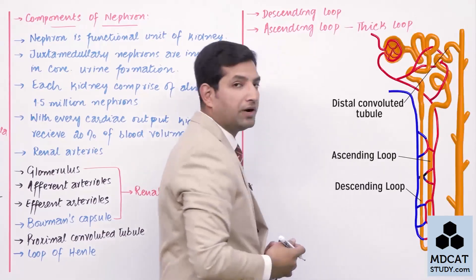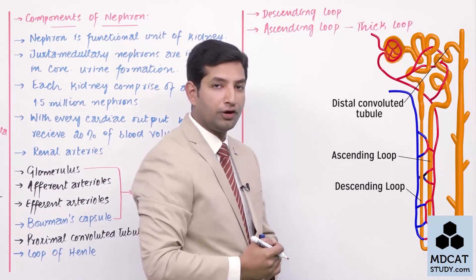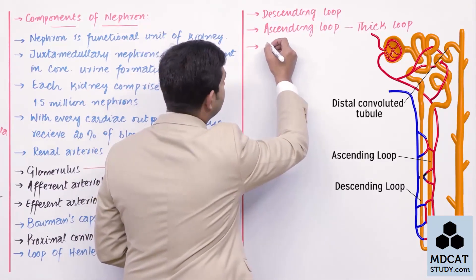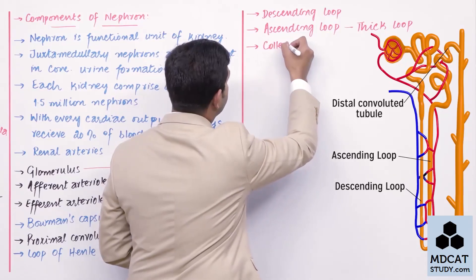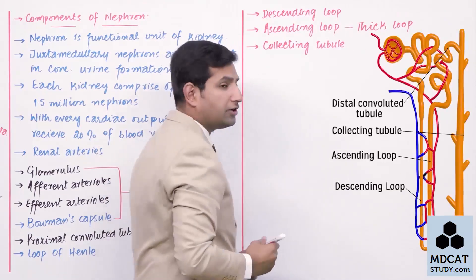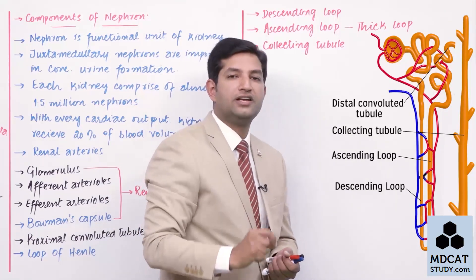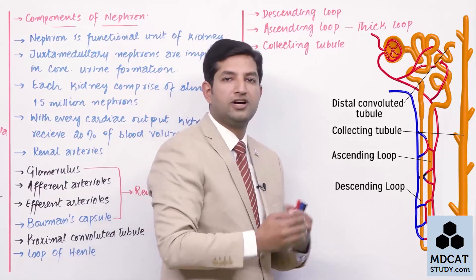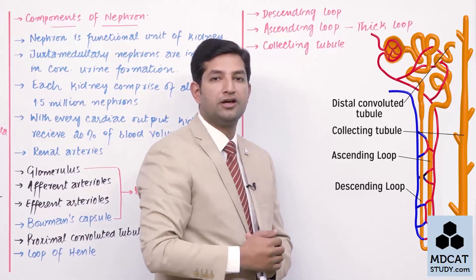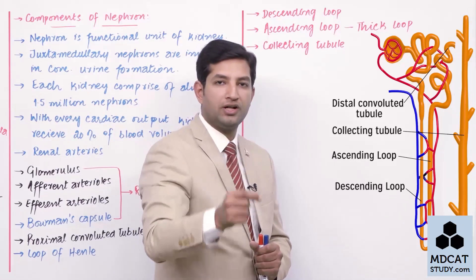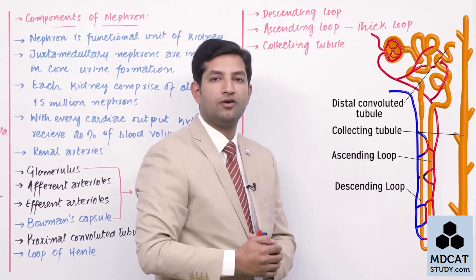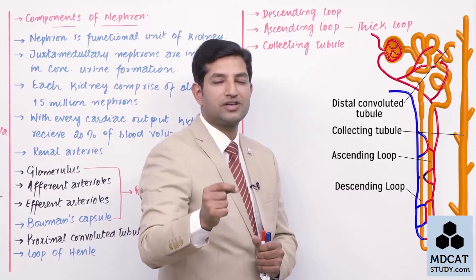After the thick ascending limb, it ends up with the collecting tubule. The collecting tubule collects everything that has been reabsorbed back into the tubular system. Ultimately, what remains — which we call urine — enters the collecting tubule. This then goes further into the tubular system of the kidney and out to the renal pelvis, and through the ureter and bladder.